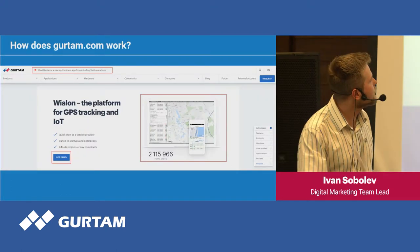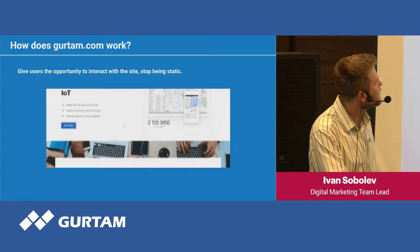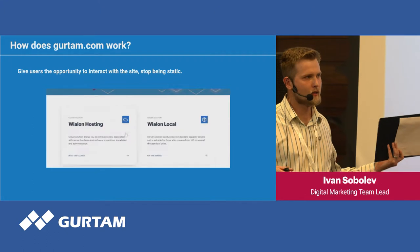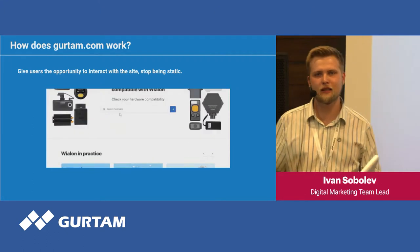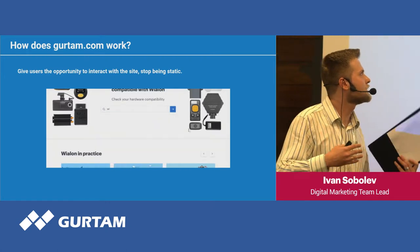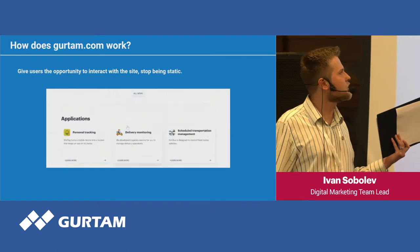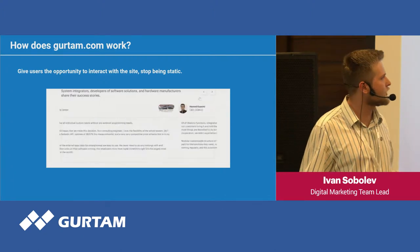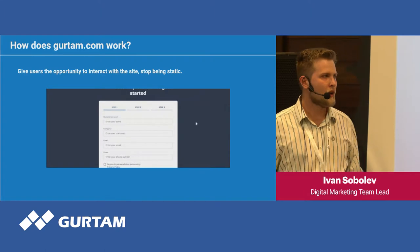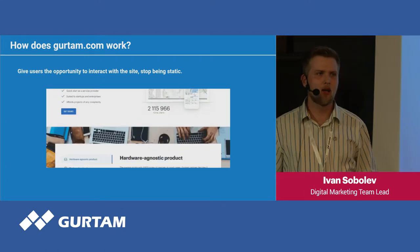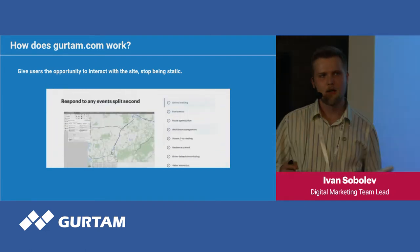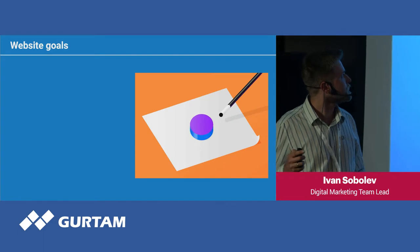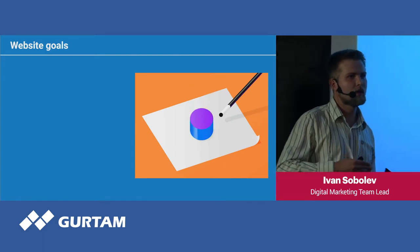Here is a gif showing the average interaction of the user with gurtam.com. We have a bunch of interactive elements that people can interact with — they can search for supported devices, scroll through our applications and testimonials, and then fill the form. Our form is now step-by-step: at first it looks very simple, but when you start filling it you have three steps.